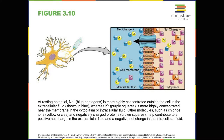In the resting state, sodium is at higher concentrations outside the cell, so it will tend to move into the cell. Potassium, the K+, on the other hand, is more concentrated inside the cell and will tend to move out of the cell. In addition, the inside of the cell is slightly negatively charged compared to the outside. This provides an additional force on sodium, which is the Na+, causing it to move into the cell.